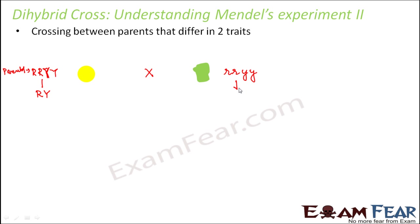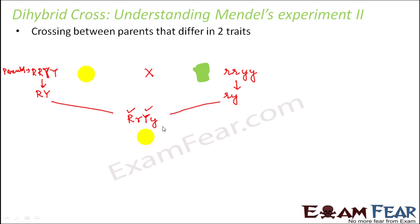Similarly, the only possible gamete that the wrinkled and green parent can form is small r, small y. So these are the possible gametes. For the F1 generation, these two will combine together to form capital R, small r, capital Y, small y. Since capital R is dominant and capital Y is dominant, therefore the F1 generation will all be round and yellow. So this is the F1 generation.